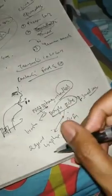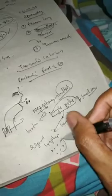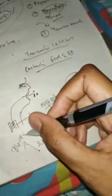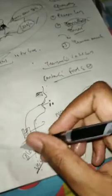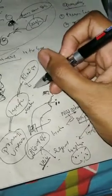From the Peyer's patches, the virus goes to the regional lymph nodes where it multiplies, increasing in number. From the regional lymph nodes it enters the bloodstream through the veins, since lymph drains into veins. This entry into the bloodstream is known as primary viremia. It then re-enters the lymphatics, multiplies again, and reaches the bloodstream a second time — this is secondary viremia.